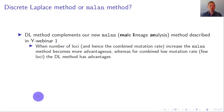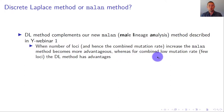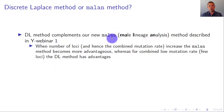Should we use the discrete Laplace method or the Milan method introduced in Y-webinar number one — the 2017 method by David Balding and me? The discrete Laplace method complements the Milan method. When the number of loci and hence the combined mutation rate increases, the Milan method becomes more advantageous. When the combined mutation rate is low — few loci — the discrete Laplace method has advantages. For new 27-marker kits like YFiler Plus, we recommend the Milan method, whereas for only five to seven loci or a few more, the discrete Laplace method is appropriate.